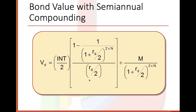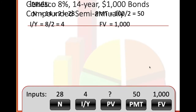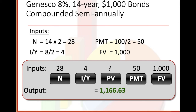If paid quarterly, you'd divide by four and multiply by four throughout. For the 8%, 14-year, $1,000 bond compounded semi-annually: N = 14 times 2 = 28, interest per year = 8 divided by 2 = 4, payment = 100 divided by 2 = $50, future value = $1,000. So our inputs are N = 28, interest = 4, payment = $50, future value = $1,000. Our output will be $1,166.63.